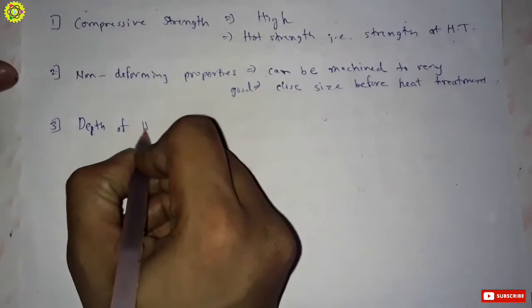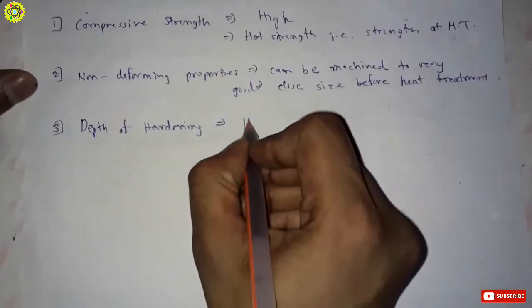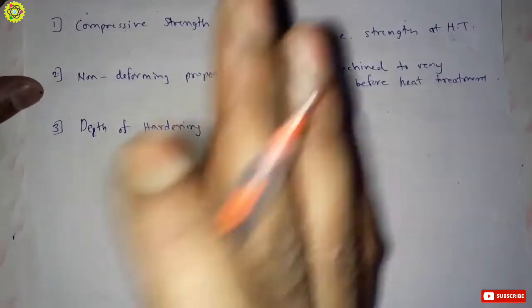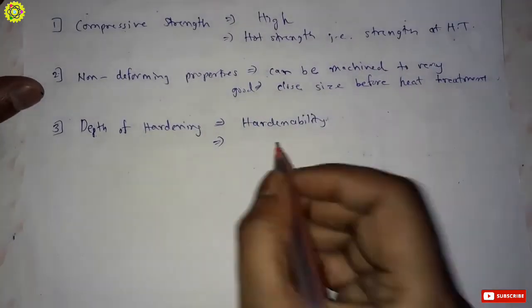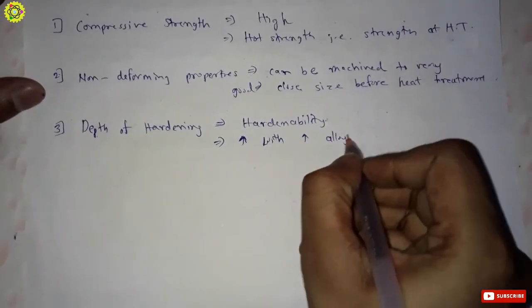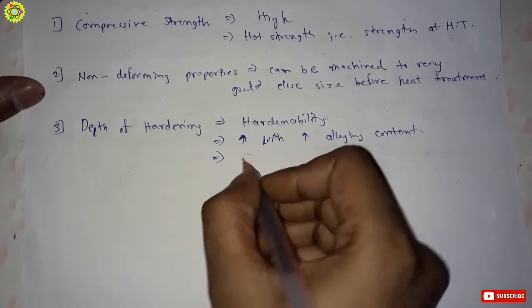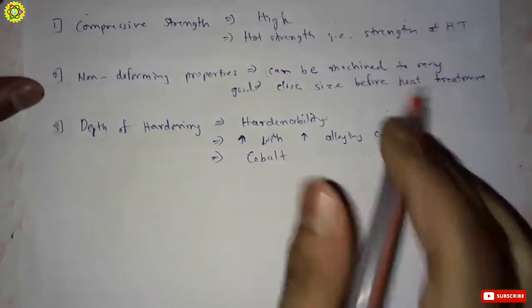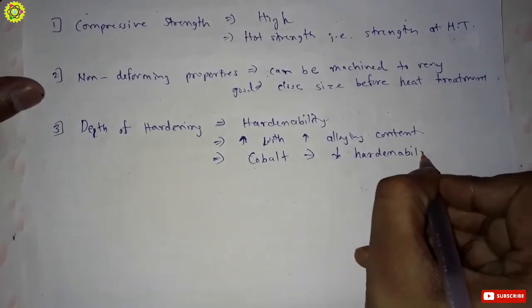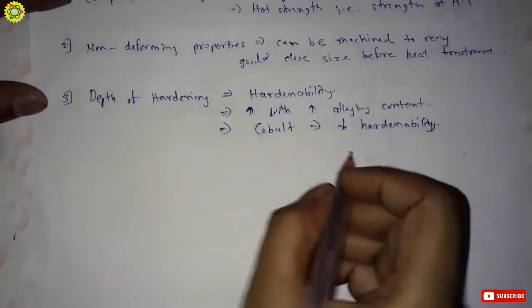The third property is depth of hardening. Depth of hardening is related to hardenability. Hardenability of the steel depends on alloying elements — it increases with increasing alloying content. One important thing is that when we use cobalt as an alloying element, it decreases the hardenability.